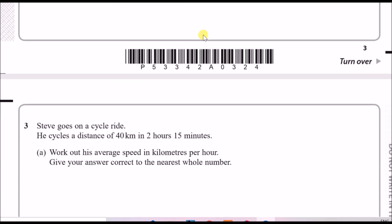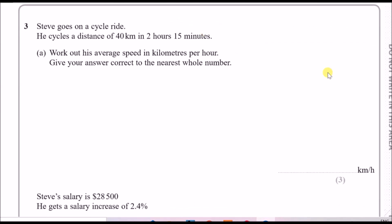Number three: Steve cycles a distance of 40 kilometres in 2 hours and 15 minutes. Work out his average speed in km/h to the nearest whole number. For any speed-distance-time problem, always use the formula: speed = distance ÷ time. We have the distance in kilometres, now we need the time in hours.